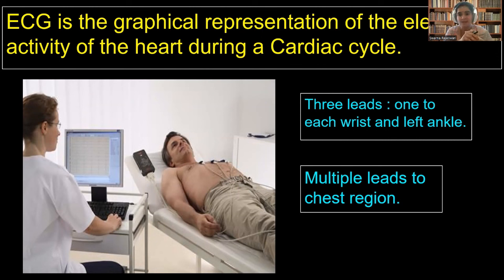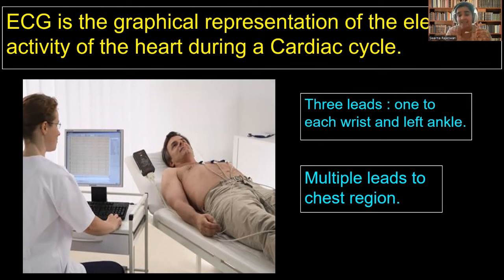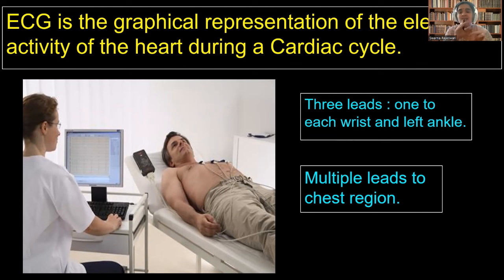Here the patient is allowed to lie down and is connected with three leads — one to each wrist and one to the left ankle. How the heart is working in different phases of the cardiac cycle is recorded in the electrocardiogram machine and we get a small graph paper slip showing the readings of each phase, which we call electrocardiogram. For more accurate readings and heartbeat information, multiple leads are also connected to the chest region.